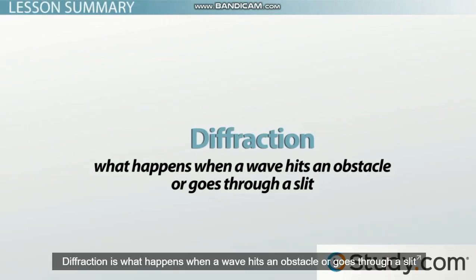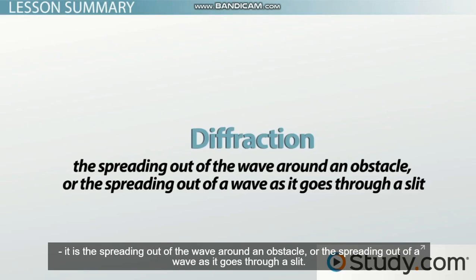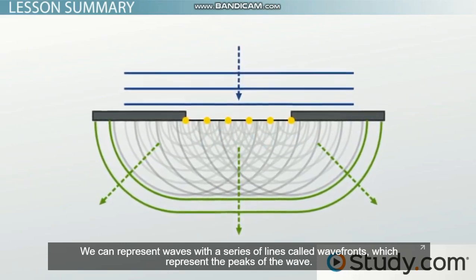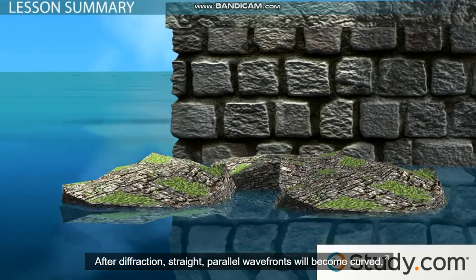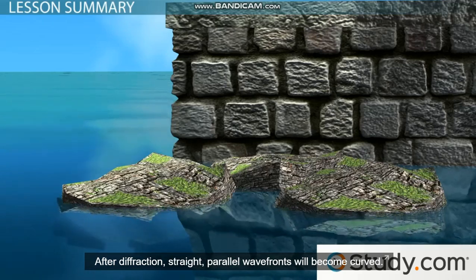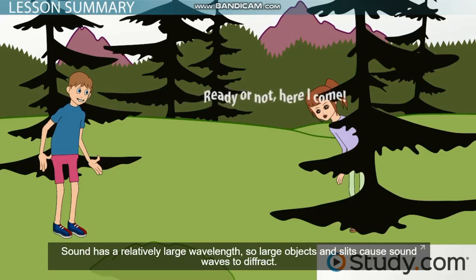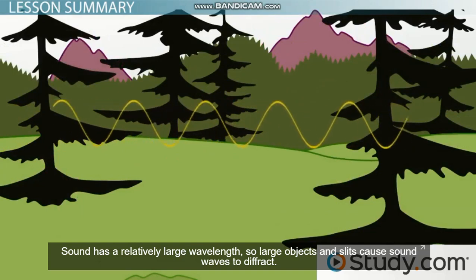To recap: diffraction is what happens when a wave hits an obstacle or goes through a slit — it's the spreading out of a wave around an obstacle or through a slit. We can represent waves with wavefronts, which represent the peaks of a wave; after diffraction, straight parallel wavefronts will become curved. Diffraction is the reason that sound waves can be heard around corners or behind objects, since sound has a relatively large wavelength, so large objects and slits cause sound waves to diffract.